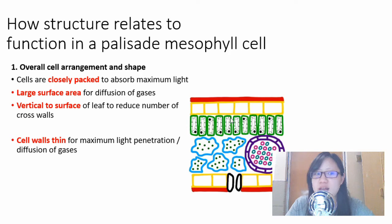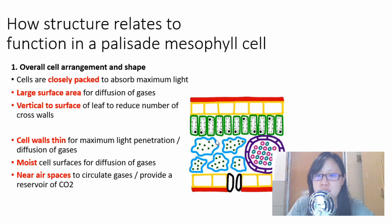The cell walls of palisade mesophyll cells are thin, moist cell surfaces are present, and they're near air spaces to circulate gases. All these are to maximize the efficiency of diffusion of gases. That's cell arrangement and shape.